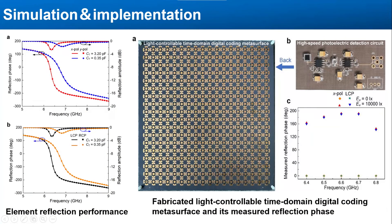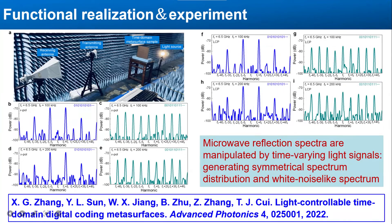The left figures present the simulated reflection amplitudes and phases of the designed metasurface element for two different capacitance values. As an experimental verification, we fabricated a light-controllable time domain metasurface sample, as shown in the right figure. We tested the reflection phases of the metasurface sample for two different illumination intensities, and observed that an approximately 180-degree phase difference can be well achieved by switching the light intensity.